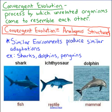The next one, convergent evolution, actually contrasts adaptive radiation. This is a process by which unrelated organisms begin to look really similar because they're in a similar environment. Convergent evolution is equal to analogous structures from Evidence of Evolution Part 1, so you can go back and see that video if you don't remember it. This is where similar environments are producing similar adaptations.